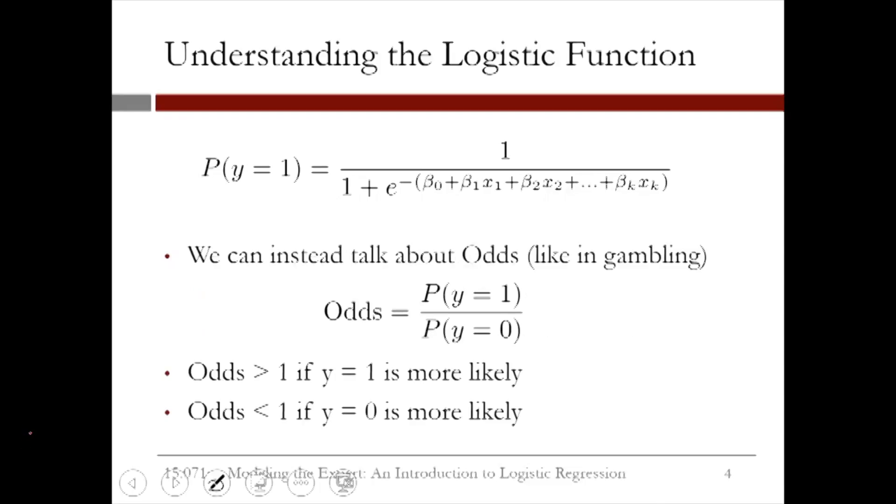Another useful way to think about the logistic response function is in terms of odds, like in gambling. The odds are the probability of 1 divided by the probability of 0. The odds are greater than 1 if 1 is more likely, and less than 1 if 0 is more likely. The odds are equal to 1 if the outcomes are equally likely.